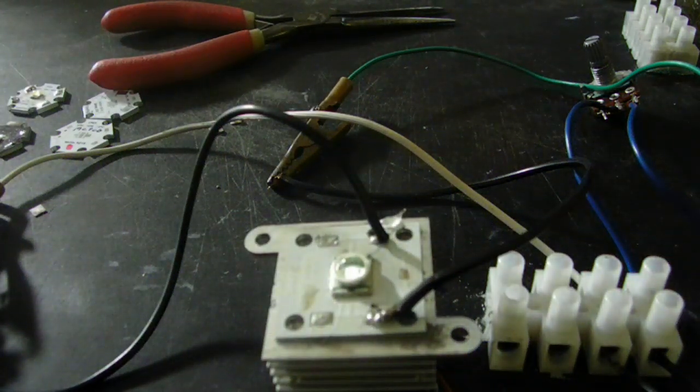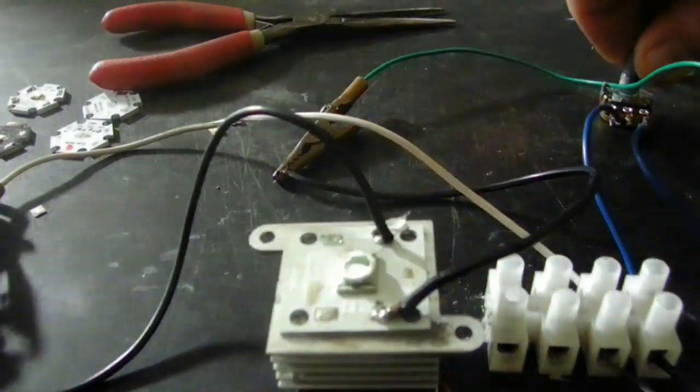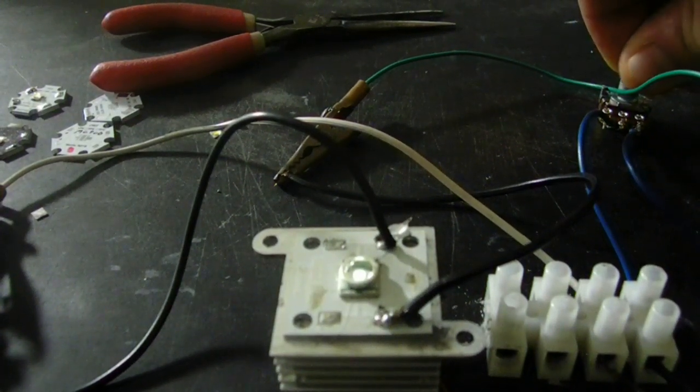I have this hooked up to a 3.7 volt, 350 milliamp driver. Now, this is a 1 watt LED. It should be a lot brighter than that, but it's not because I have a resistor in line.